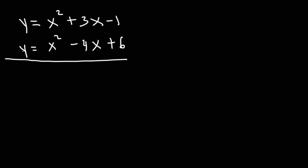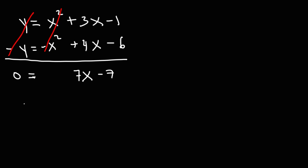I'm going to use elimination for this example. I'm going to multiply the second equation by negative 1, which is equivalent to changing all the signs, and then add the two equations. The y variables will cancel and x squared will cancel, so I get 0 equals 7x minus 7. Moving the negative 7 to the other side makes it positive 7.